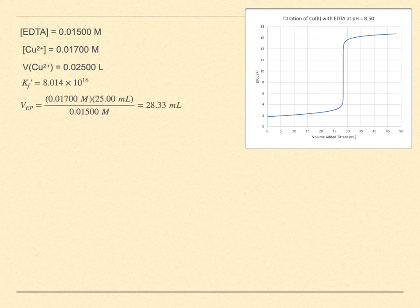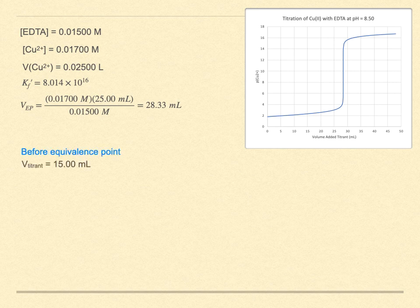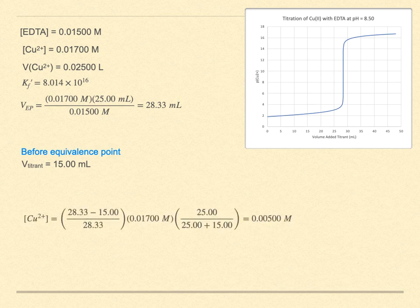Here now is a calculation for the region before the equivalence point. Let's pick an added titrant volume of 15 milliliters. Here is the calculation for that. So, this result has three parts to it. The first expression is the fraction of the analyte, the copper ion, that remains in the solution.